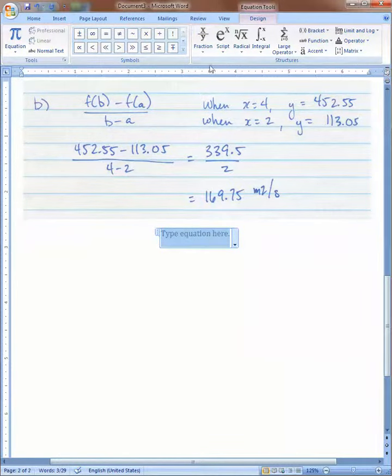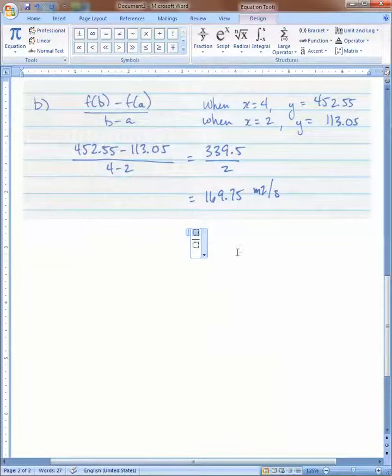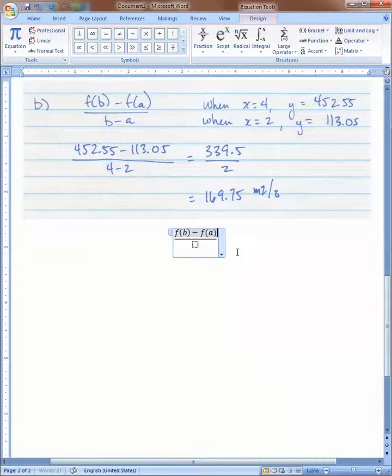We get to type our equation here. First, we pick fraction. It's right there. There's the shape we want. Then, click on top. We can just type this stuff in. Click on the bottom or use the down arrow.